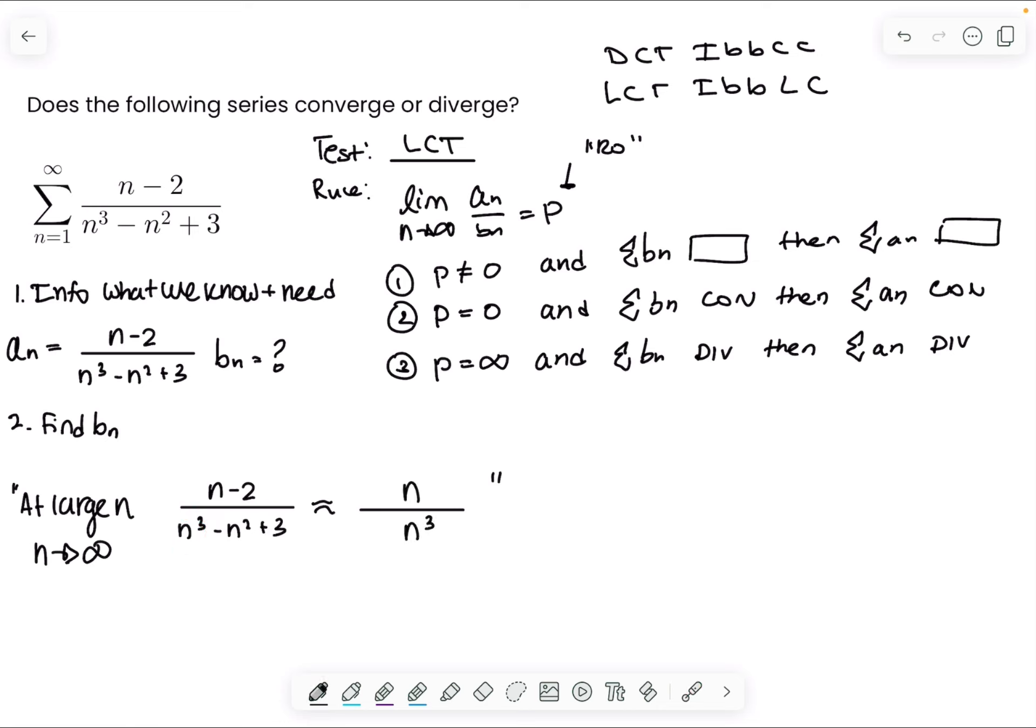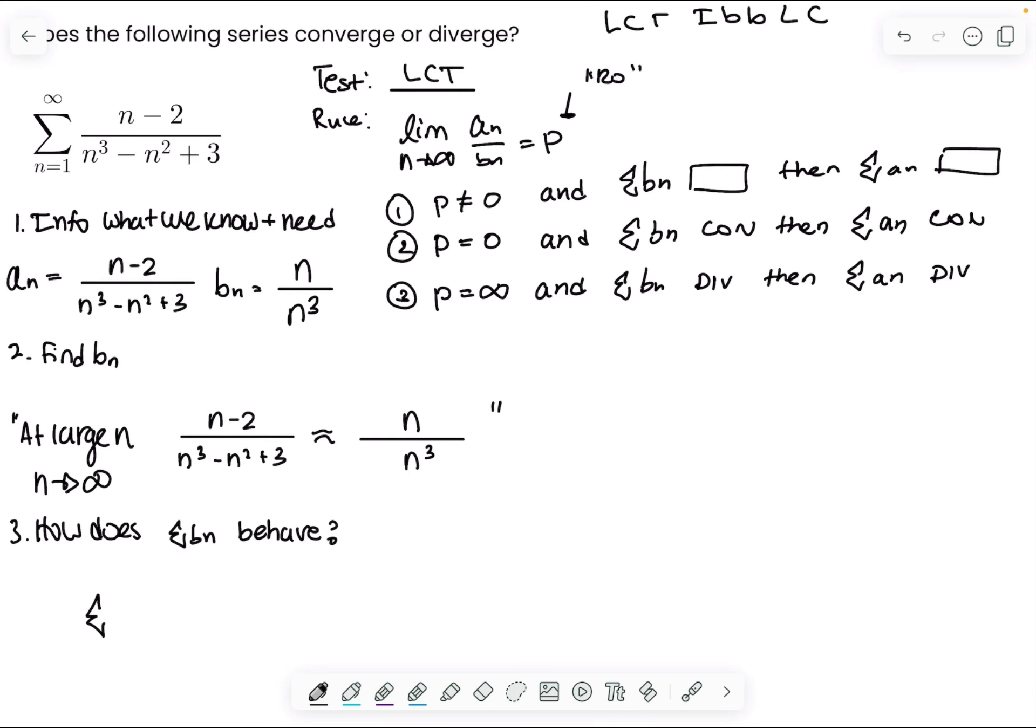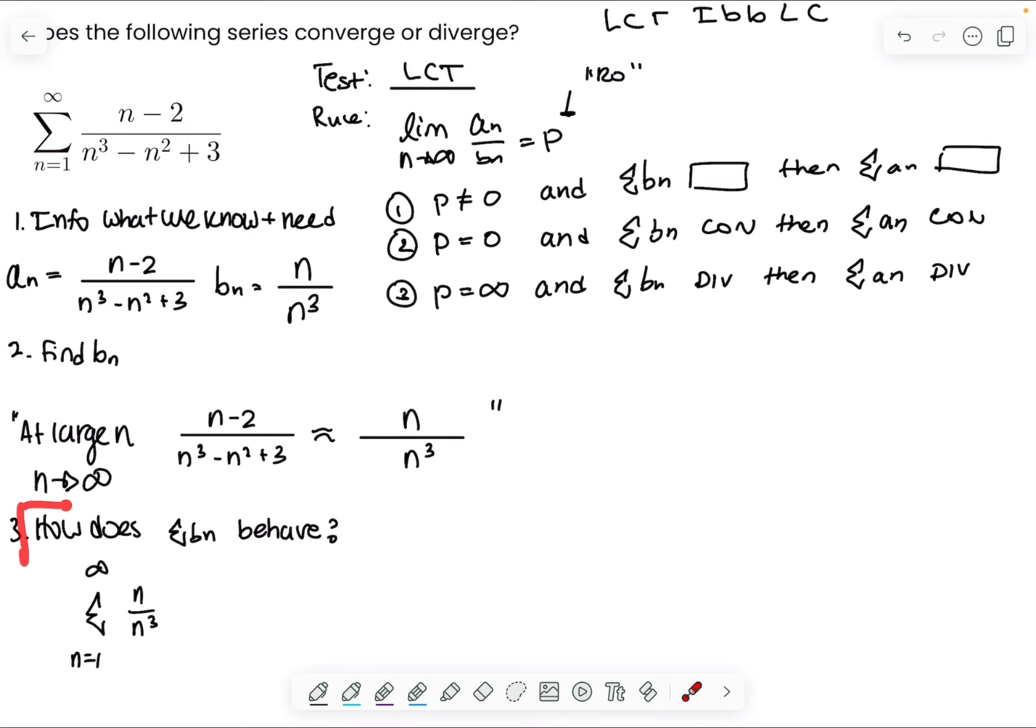So we're left with n at the top and n cubed at the bottom, and so this is our b_n. Then our third step is to find the behavior. How does the series b_n behave? So we have the series from n equals one, so if I see n equals one I'm going to write the same thing down here, of b_n.